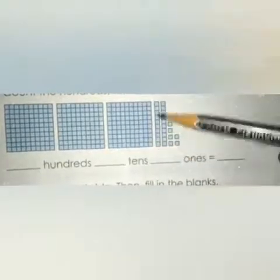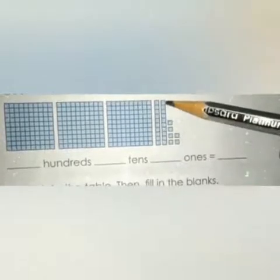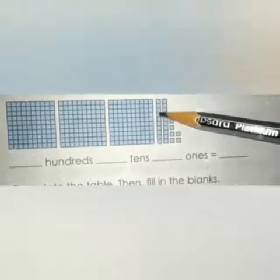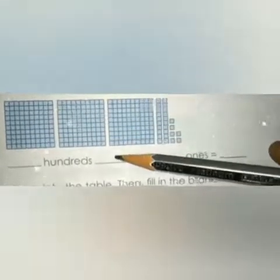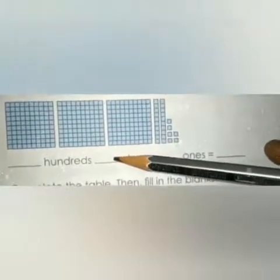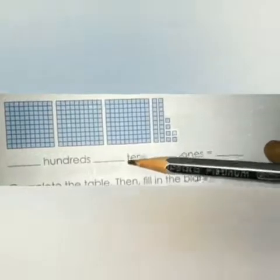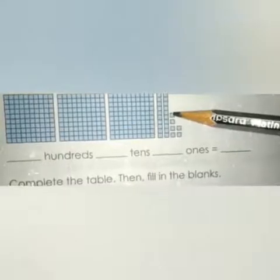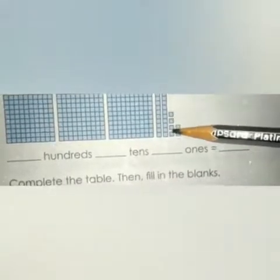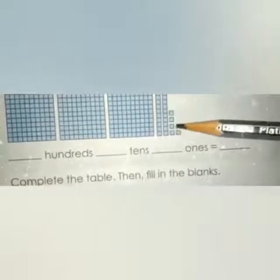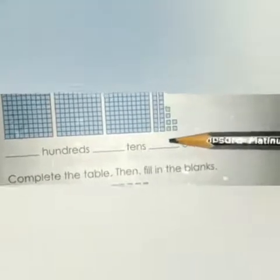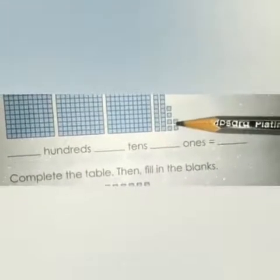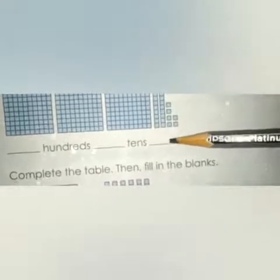Then how many tens are there? In one grid we have ten blocks — ten and ten — so two tens. You have to write two in the tens place, not twenty, because the word tens is given here. How many single blocks are there? One, two, three, four, five, six — six blocks, so you write six ones.